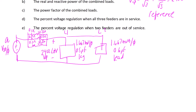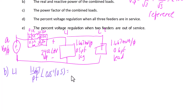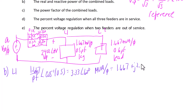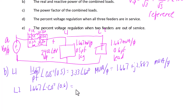For part B, we find the real and reactive power for the combined load. For load one, S1 equals 1.667 divided by the power factor with angle arc cosine of 0.5, giving 3.33 at an angle of 60 degrees MVA per phase, or in rectangular form: 1.667 plus J2.887 MVA per phase. For load two, S2 is 1.667 at an angle of negative 53.1 degrees MVA per phase.